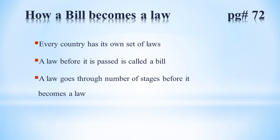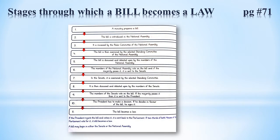Every country has its own set of laws. A law before it is passed is called a bill. A bill goes through a number of stages before it becomes a law, approved by both houses of parliament. Har country ke kuch alag laws hotey hain. Law jab tak pass nahi hota woh bill kehlata hai. Ek bill kuch stages se guzerta hai, phir law banta hai, aur parliament ke donon houses — National Assembly aur Senate — se approve hota hai, tabhi woh bill law mein convert ho jata hai.